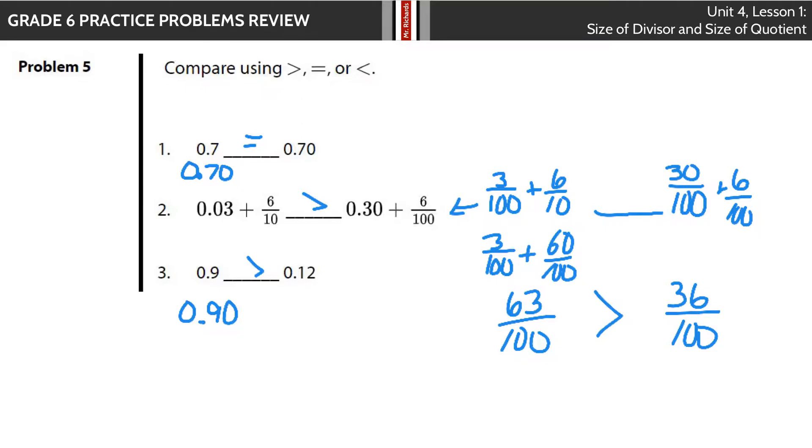Speaking of place value, we have 0.03 + 0.6 compared to 0.30 + 0.06. Basically, what I set up here is an addition with fractions question. The 30 hundredths plus 6 hundredths on the right side gets you 36 hundredths.